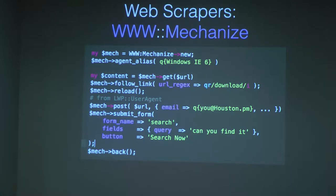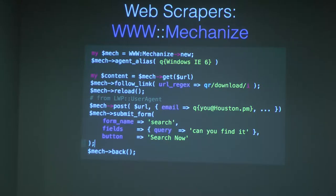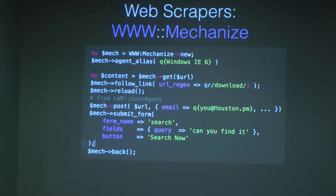In a Mechanize sample, you create your user agent, set your user agent string with whatever you want — your robot name. Then you do a GET request on a URL, click on the first link matching a regex, and ask to refresh the page content. You can also submit a POST request exactly as if you were filling fields manually. The Mechanize object keeps the state of where you are, so a reload is the current page, not the original page.